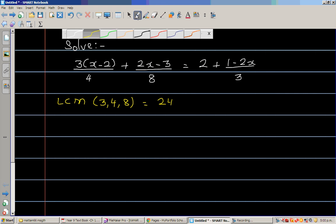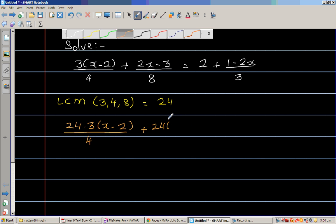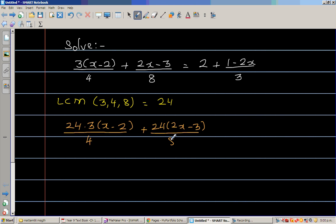So what I'm going to do next is I'm going to multiply each of the numerator by 24. So it is 24 times 3 times x minus 2 over 4 plus 24 times 2x minus 3 over 8 is equal to 24 times 2 plus 24 times 1 minus 2x over 3.